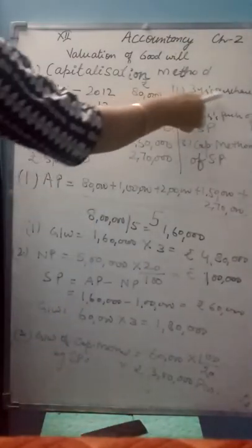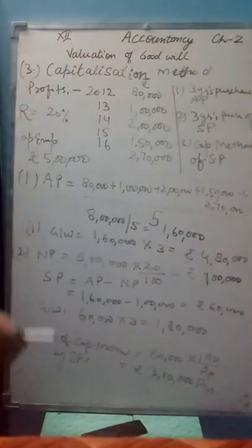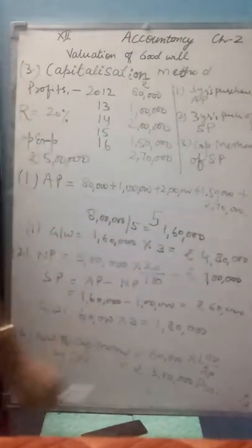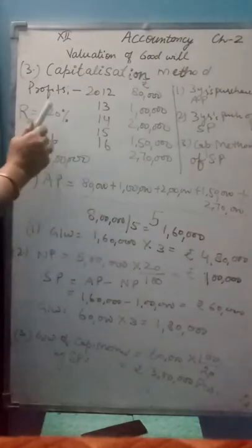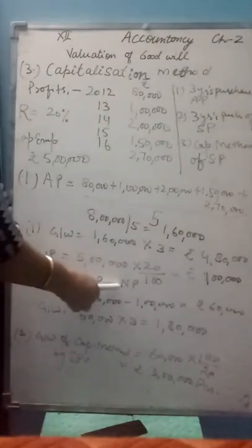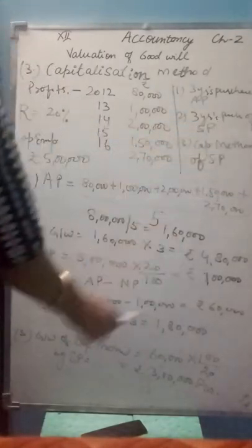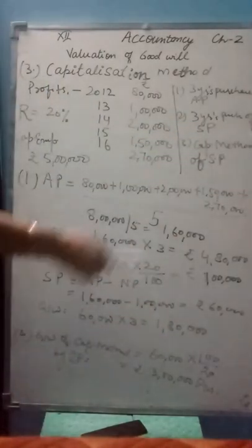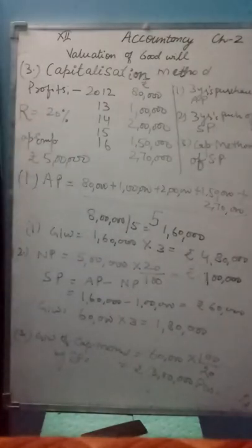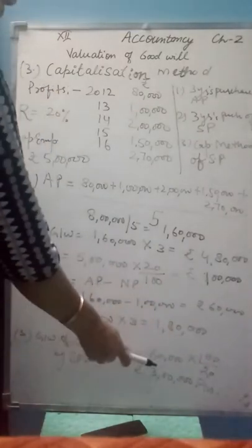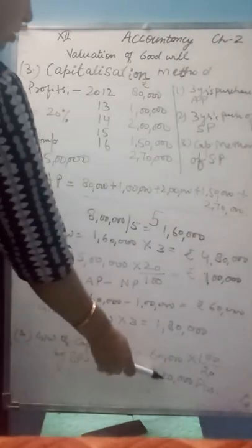Quick recap: First, 3 years purchase of AP - we calculated sum of profits upon 5 years = 1,60,000, then into 3 = 4,80,000. Second, 3 years purchase of SP - NP = 5 lakhs into 20% = 1 lakh, SP = 1,60,000 minus 1,00,000 = 60,000, goodwill = 60,000 into 3 = 1,80,000. Third, capitalization method - SP into 100 upon rate = 60,000 into 100 upon 20 = 3 lakhs.